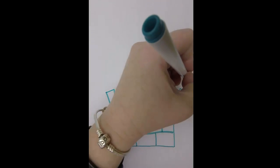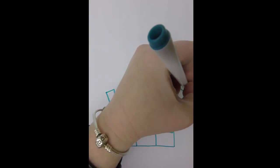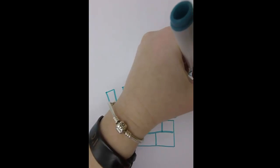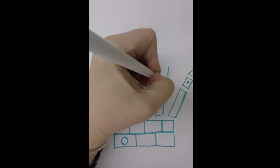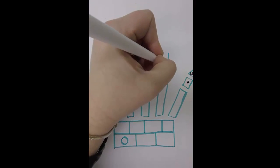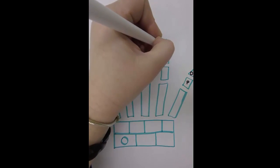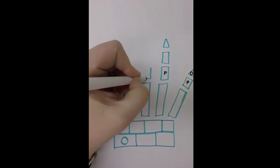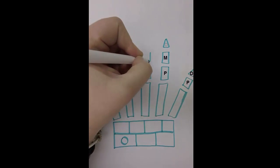We'll now add in the phalanges. The thumb will only have two phalanges, proximal and distal. Each of the remaining fingers, or digits, will have three phalanges: proximal, middle, and distal.